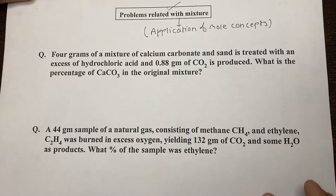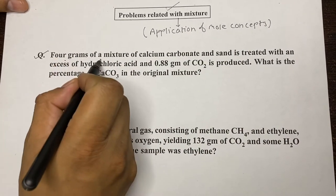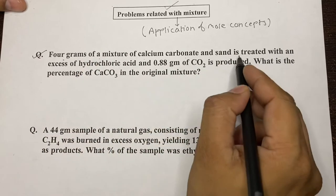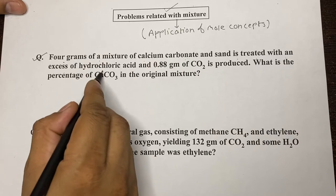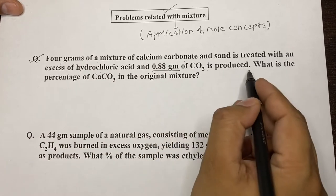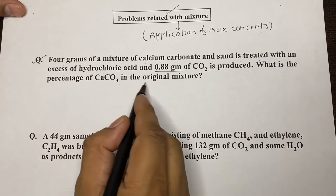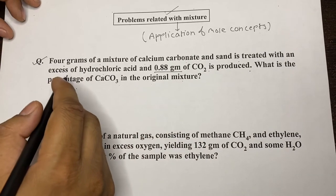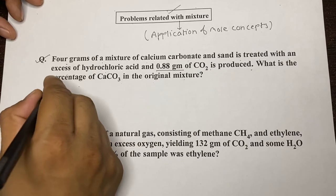Let's start with the first example: 4 grams of a mixture of calcium carbonate and sand is treated with an excess of hydrochloric acid and 0.88 grams of CO2 is produced. What is the percentage of calcium carbonate in the original mixture?